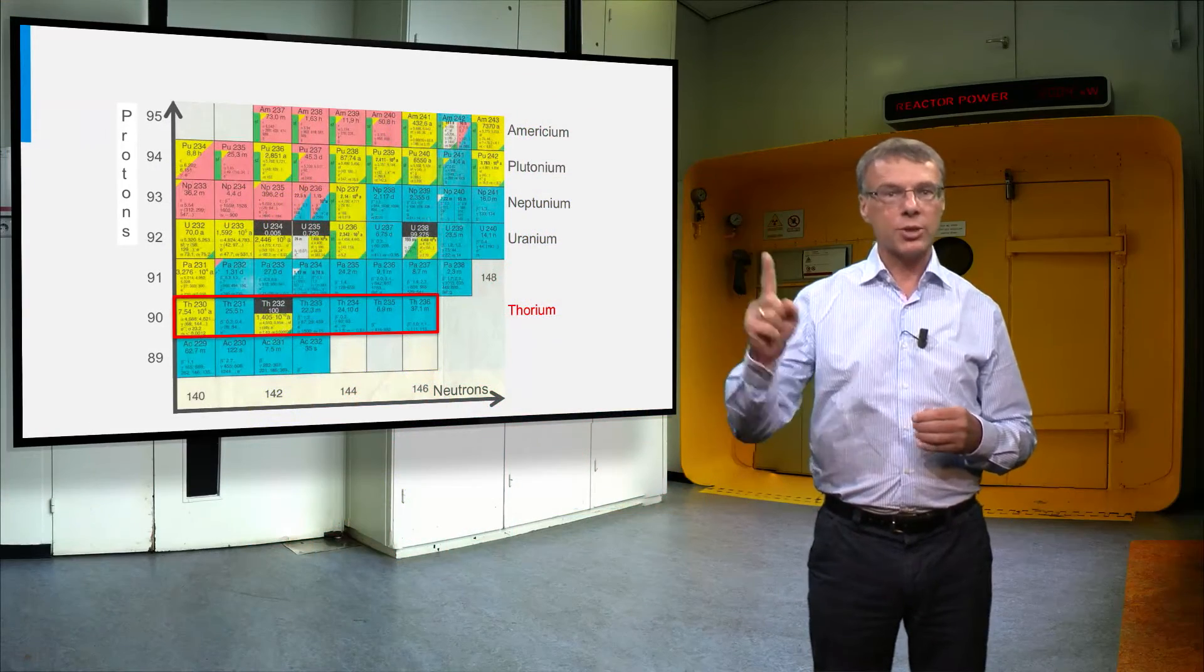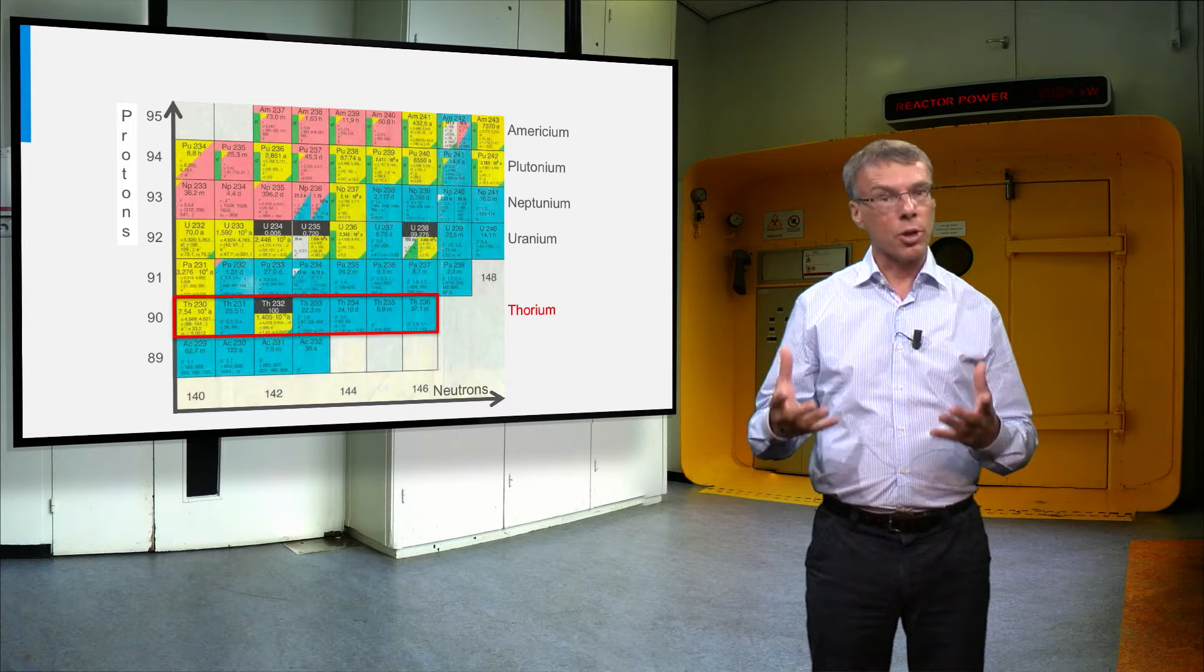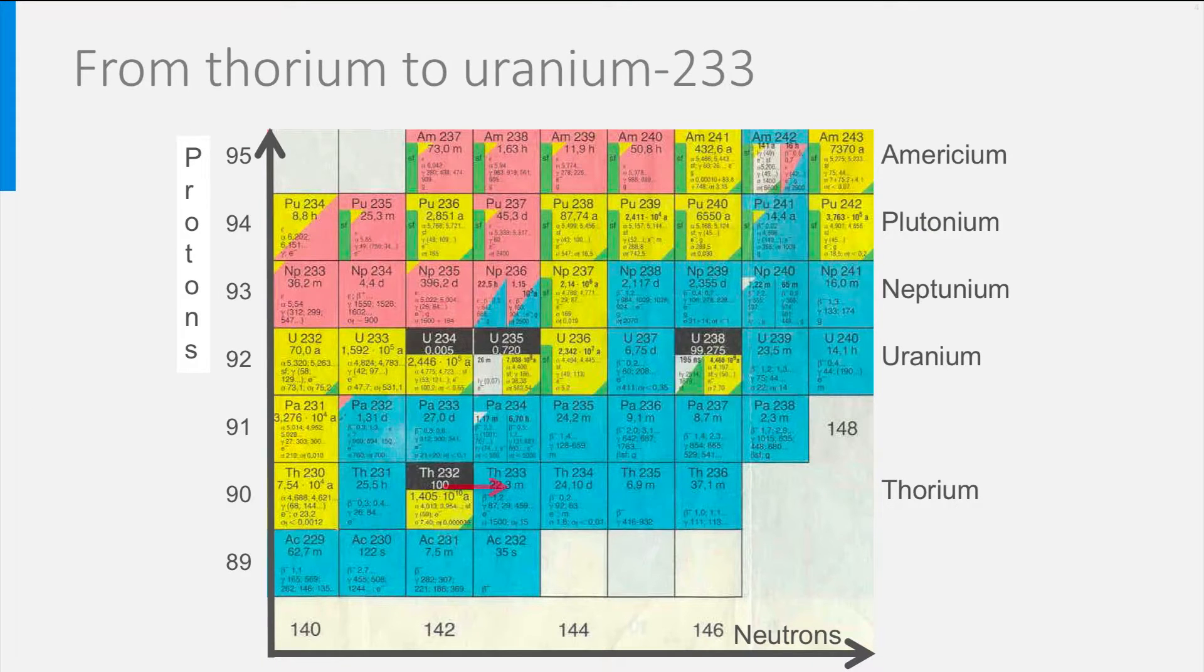Thorium has only one natural isotope, namely thorium-232. Thorium-232 itself is not fissile and cannot be used as a fuel in a nuclear reactor. However, when it captures a neutron, the product thorium-233 decays quickly to protactinium-233, which decays with a half-life of about one month to uranium-233.